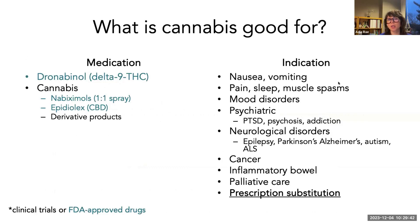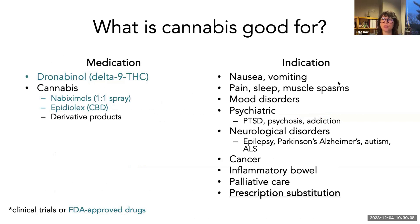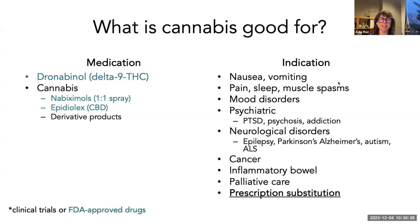If we think about why patients might be using cannabis, there are several forms of cannabinoid medication — some FDA approved, shown in blue, and botanical cannabis products. The most common conditions people treat with cannabis at an epidemiological level are chronic pain, along with mood disorders and sleep disorders. The field of cannabis medical research has really skyrocketed over the last five to ten years.